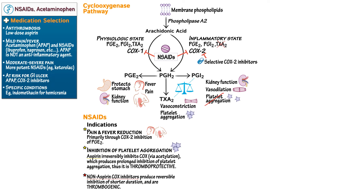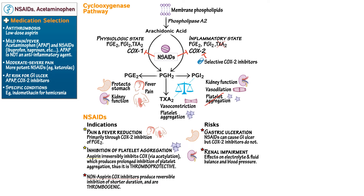Now let's turn to some of the key risks of NSAIDs. First, gastric ulceration: NSAIDs can cause GI ulcer because they block the housekeeping activity of prostaglandin E2. But selective COX-2 inhibitors should not, because they only block prostaglandin E2 in inflammatory or cancerous states and don't affect the physiological protection of the gastric mucosa. NSAIDs can also cause renal impairment due to effects on electrolyte and fluid balance and blood pressure, and can produce hypertension due to complicated direct vascular and indirect renal effects.